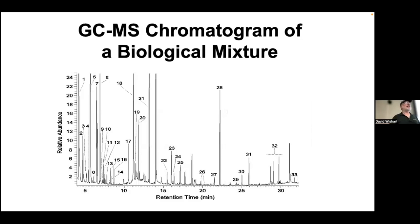A GC chromatogram run for about 30 minutes shows peaks that are much narrower than LC peaks, and many more peaks are visible. This highlights how much better gas chromatography is over liquid chromatography in resolution — called the plate count — and gas chromatography is exceptional at that.